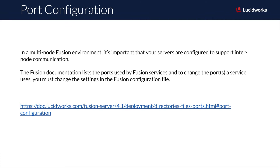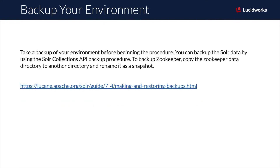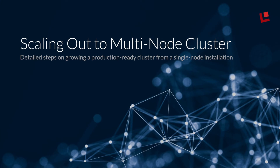When configuring the servers in your Fusion cluster, make sure that all of the servers can communicate with each other on the ports listed in the Fusion documentation. To make changes to these default ports, you can do so using the Fusion properties file. As always, when making changes in a production environment, make sure to take a backup of your environment, and we recommend backing up Solr and Zookeeper data separately.